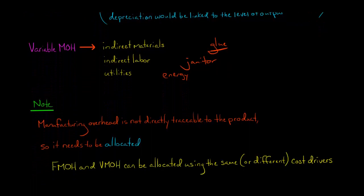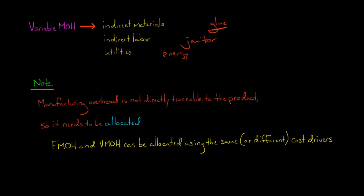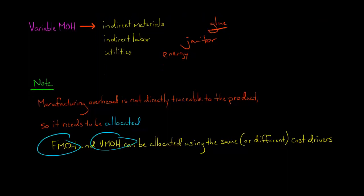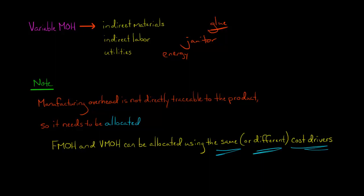Note that manufacturing overhead is not directly traceable to the product — these are indirect manufacturing costs, so we need to allocate manufacturing overhead rather than directly trace it. Fixed manufacturing overhead and variable manufacturing overhead can be allocated using the exact same cost drivers — for example, machine hours — or you could use different cost drivers, one for fixed manufacturing overhead and a different one for variable manufacturing overhead.